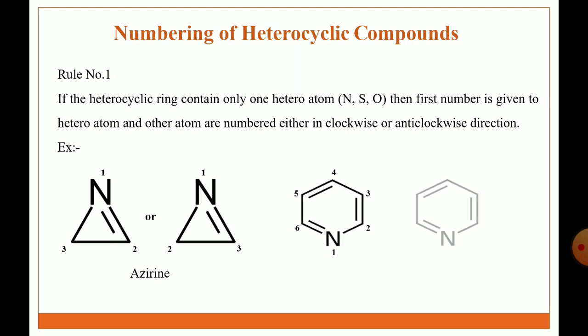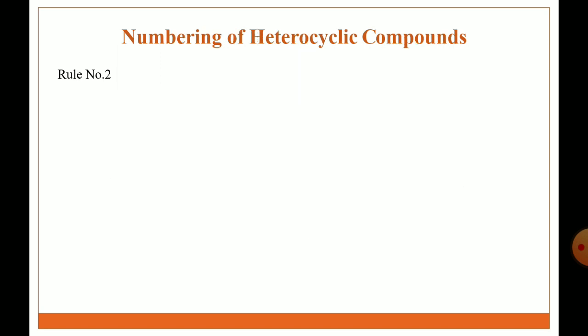Second example: this is a six-member heterocyclic ring containing nitrogen as a heteroatom — name is pyridine. Similarly, the first number is given to the heteroatom, that is nitrogen, and other atoms are numbered either in a clockwise or anticlockwise direction.